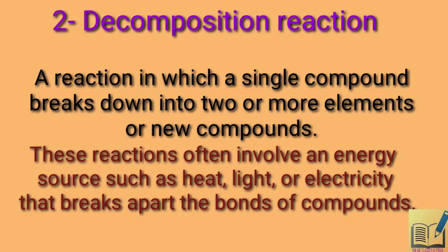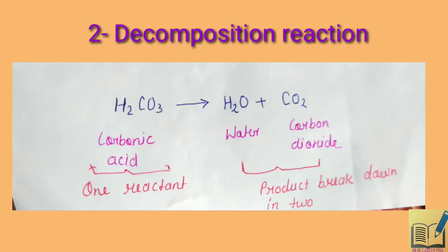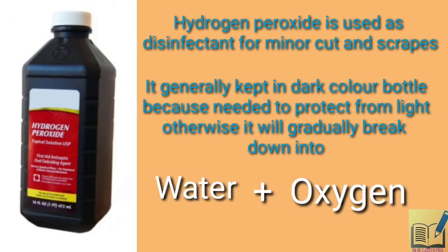For example, we can see this in soft drinks. Carbonic acid is present as an ingredient in soft drinks, and when we open the drink, the carbonic acid breaks down into water and carbon dioxide — H₂CO₃ breaks into H₂O and CO₂. Another example: hydrogen peroxide is used as a disinfectant for minor cuts and scrapes. It is generally kept in a dark-coloured bottle because hydrogen peroxide is highly reactive with light — when it reacts with light, it breaks down into water and oxygen. This is the decomposition reaction.